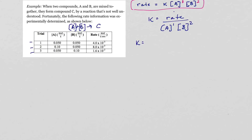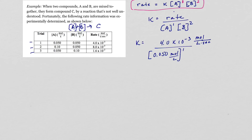Using trial 1's data: we have a rate of 4.0 times 10 to the negative 3. We divide by the concentration of A from trial 1, which is 0.050, and the concentration of B from trial 1, which is also 0.050. Here we do need to include the units. The rate unit is moles per liter per second — that is the concentration used up per second. The concentration of B squared means that 0.050 moles per liter gets squared in the denominator.